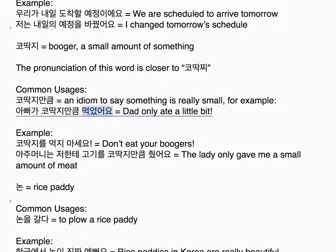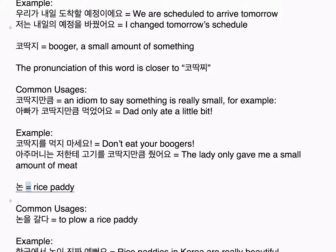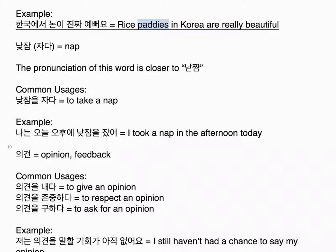코딱지 equals booger, a small amount of something. The pronunciation is closer to 코딱지. Common usages: 코딱지만큼 — an idiom to say something is really small. Examples: 아빠가 코딱지만큼 먹었어요 — dad only ate a little bit. 코딱지를 먹지 마세요 — don't eat your boogers. 아주머니는 저한테 고기를 코딱지만큼 줬어요 — the lady only gave me a small amount of meat.